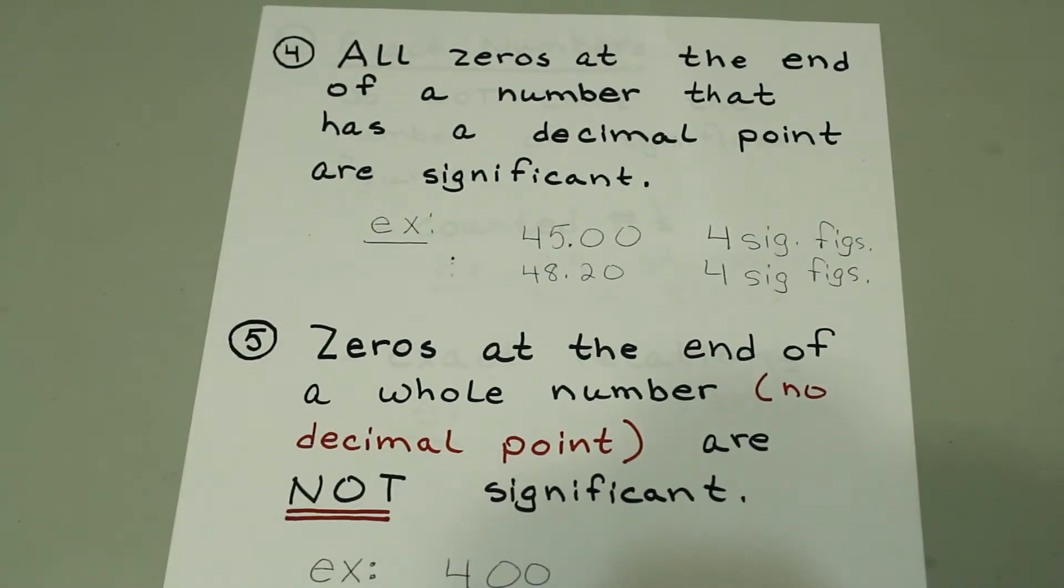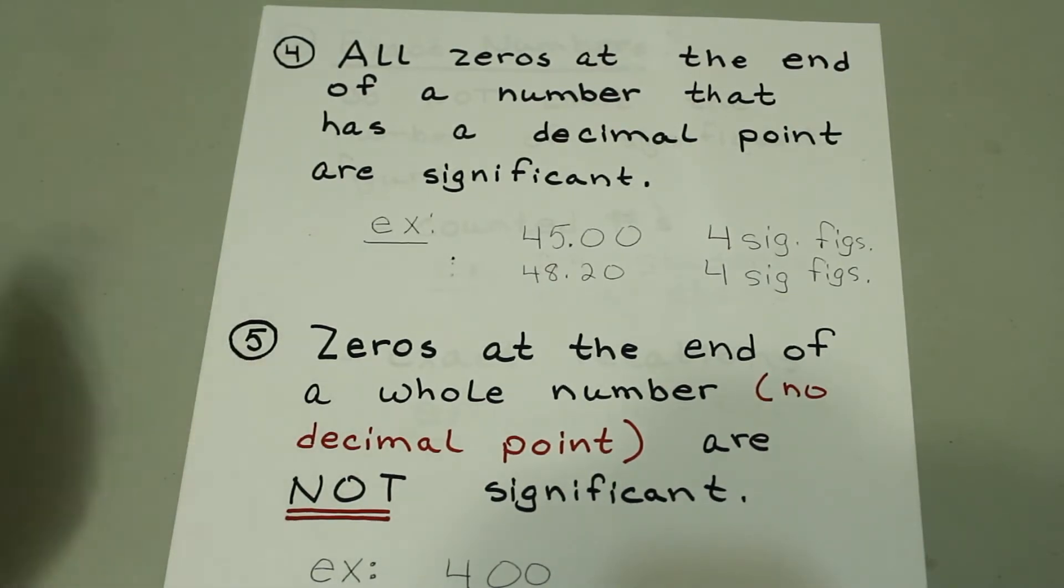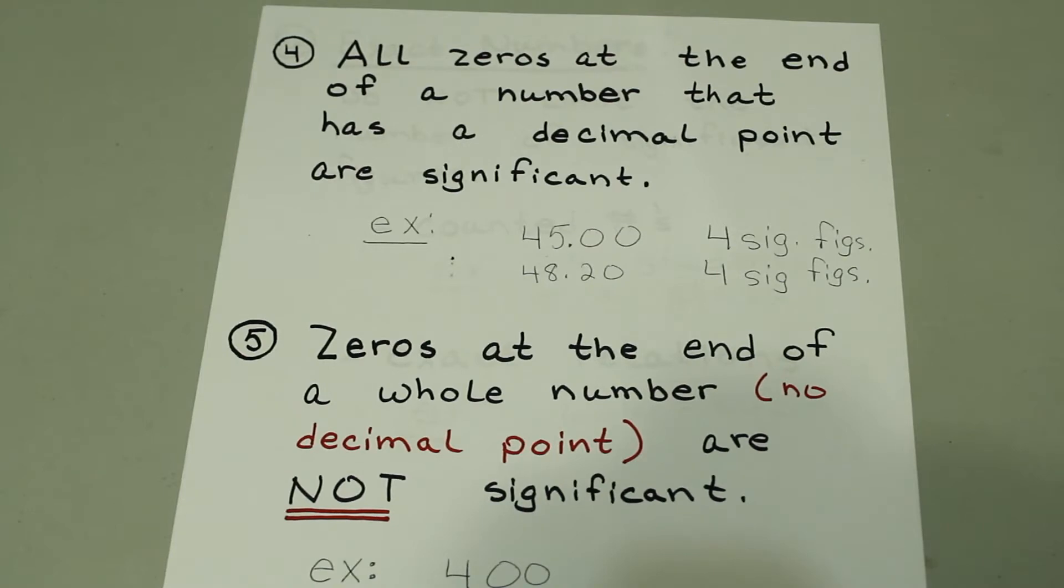All zeros at the end of a number that has a decimal point are significant. So if we have 45.00, that has four significant figures. And if we have 48.20, that's also four significant figures.